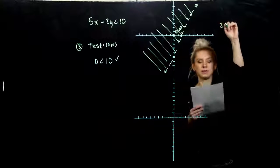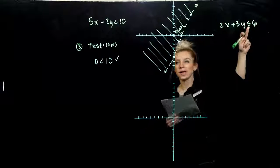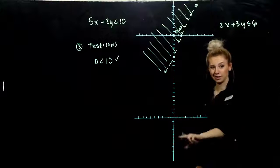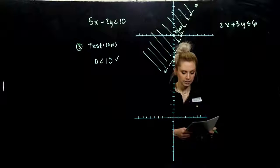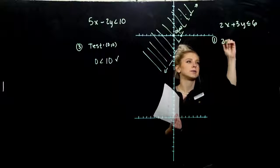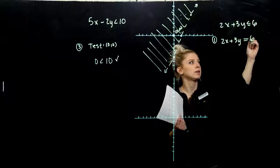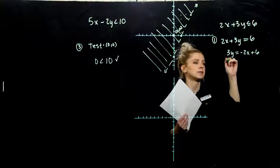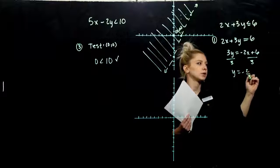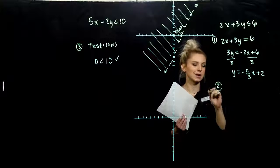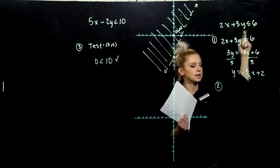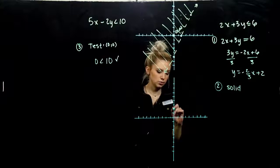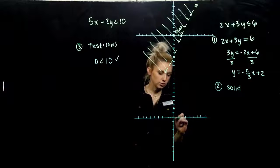The second example is different from what we've seen so far because now we have the equality case included in the inequality. That's going to change what our line looks like — we can include the boundary. Let's figure out the boundary line: exchange the inequality for equality and solve for y. We get 3y equals −2x plus 6. Dividing by 3 gives y equals −2/3 x plus 2. Is it solid or dashed? It's going to be solid — we can include the boundary.